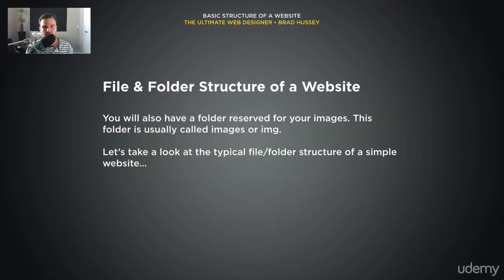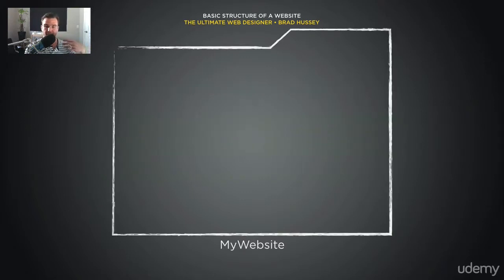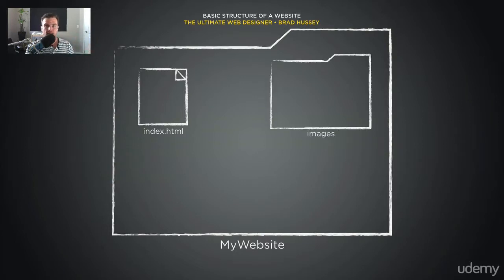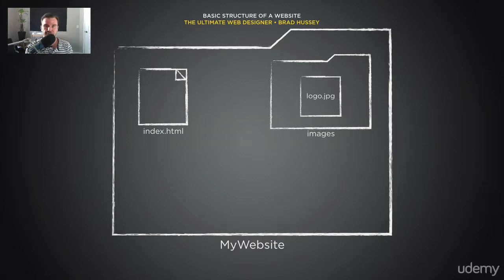Let's take a look at the typical file and folder structure of a simple website. Here we have a big folder called my_website. Within that folder we have our index.html file — our home page — and also a folder called images where we're going to hold all of our images, like the logo.jpg file.